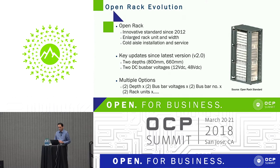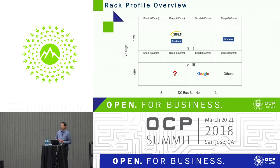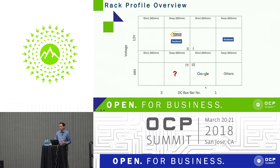The fourth parameter is rack units — for example, a 40U rack or 44U rack. So if we consider just three parameters — depth, bus bar voltage, and bus bar count — we have eight combinations. Add in different rack unit sizes, and we have 16 or more combinations. There are a lot of options.